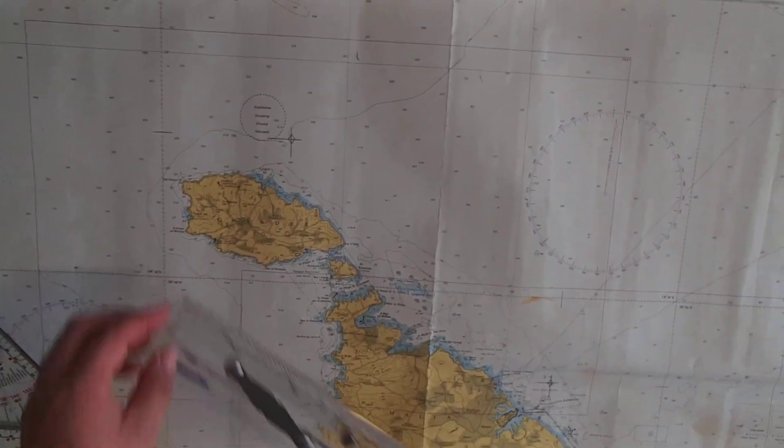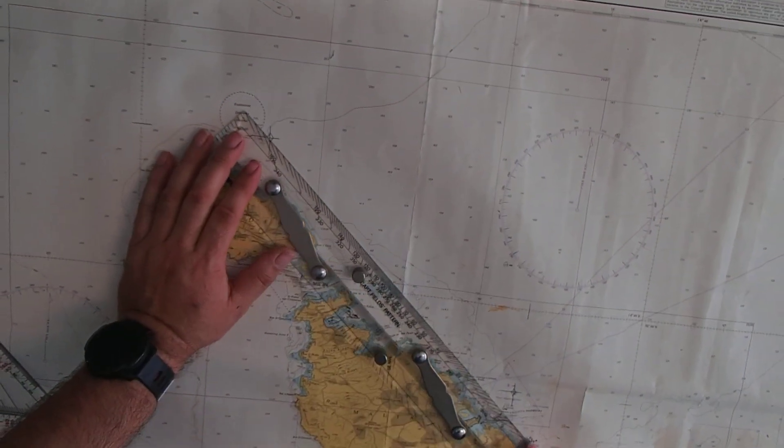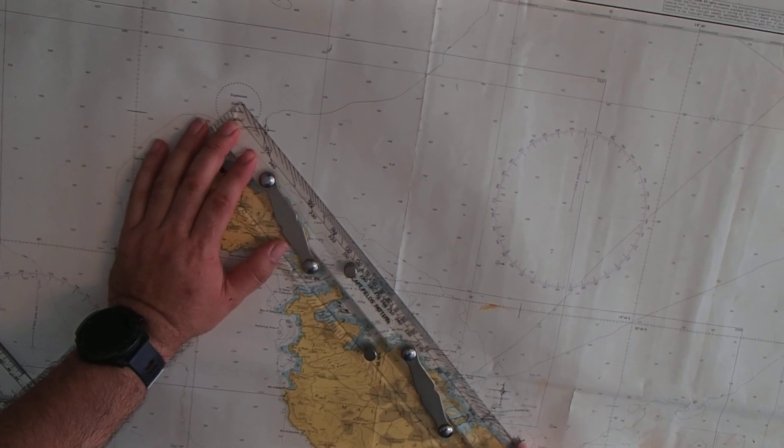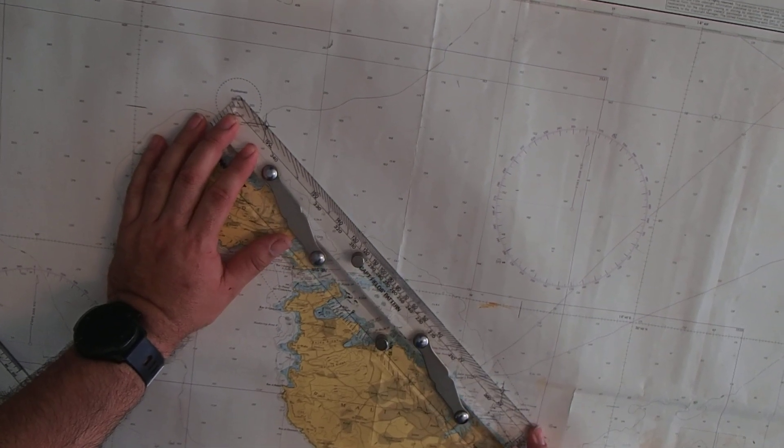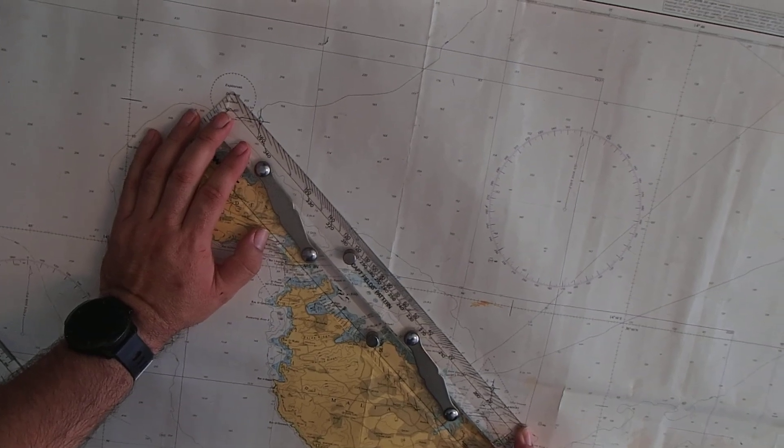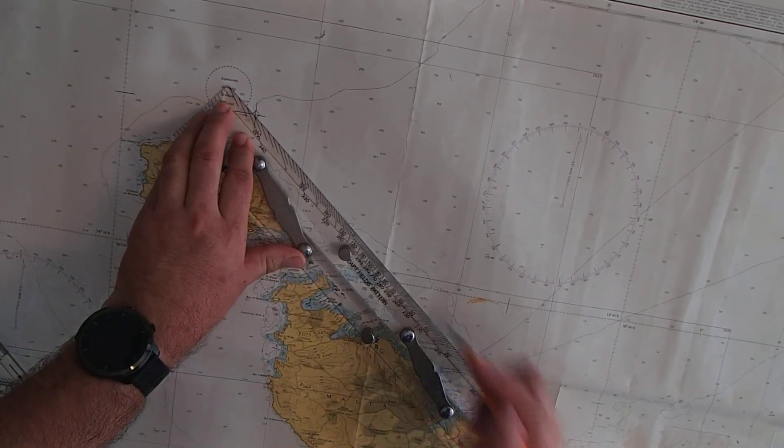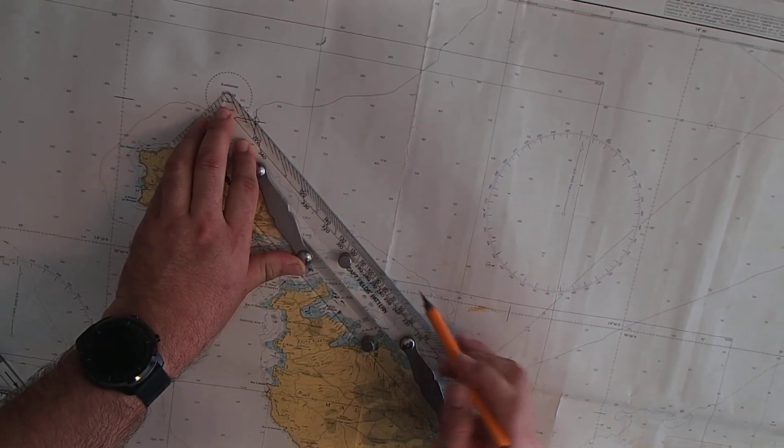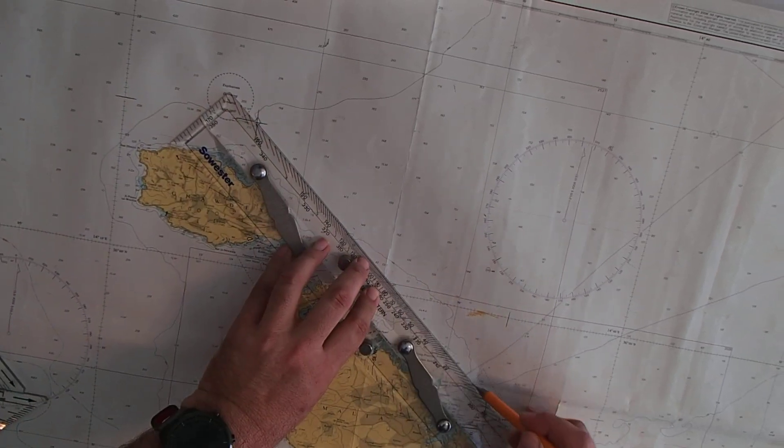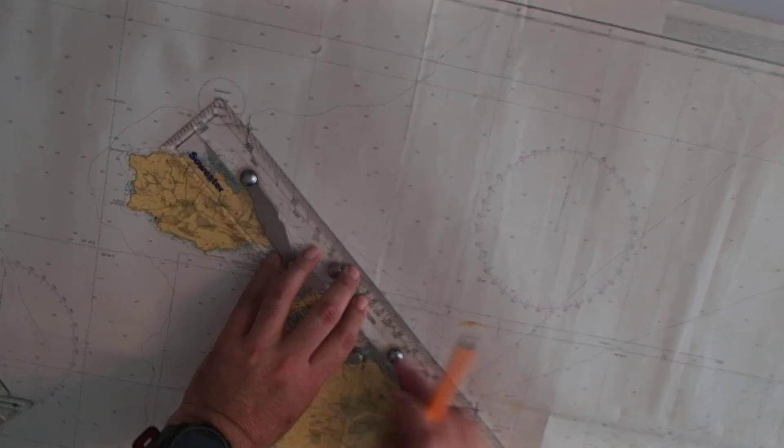We'll be joining the positions with a course line and for this we'll be using the parallel rulers. The idea of parallel rulers is that they are longer. These parallel rulers are quite short but you can find parallel rulers up to a meter or even longer. So here we have joined our positions with our course line.